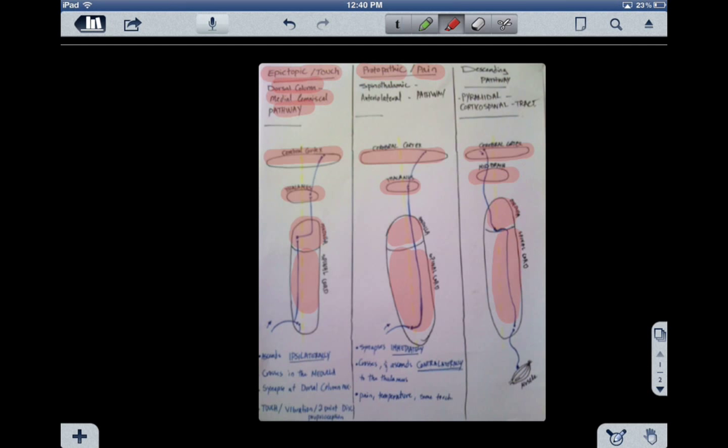Also referred to as the spinothalamic-anterolateral pathway. The third pathway is the descending pathway, because it's called from upside down, which is also called the pyramidal or the corticospinal tract.